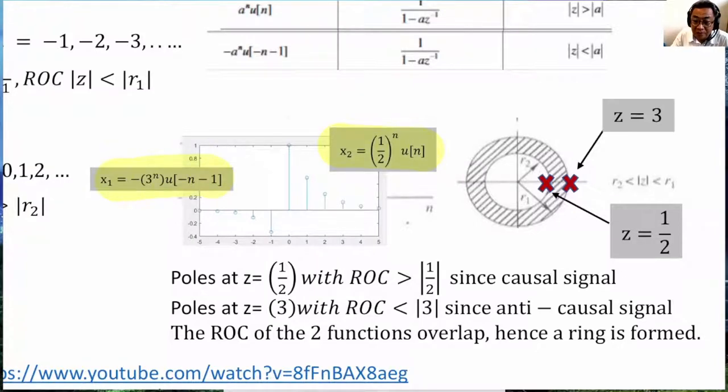On the causal side, it is half to the power of N U[n]. On the anti-causal side, it is minus bracket 3^N U[-n-1].